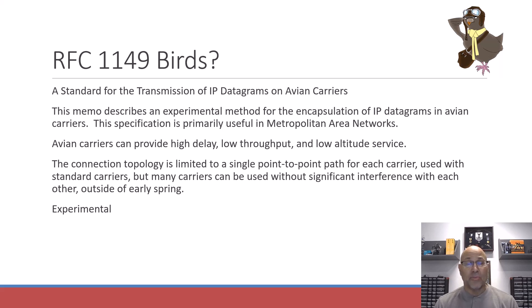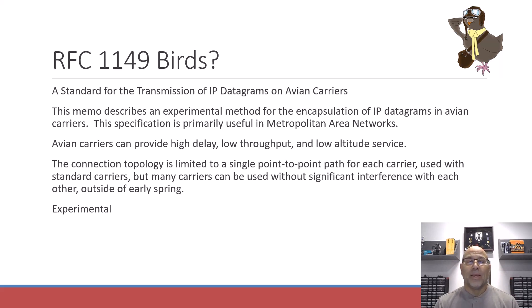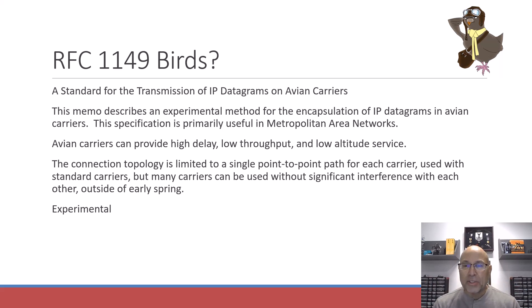Avian Carriers can provide high delay, low throughput, and low altitude service. The connection topology is limited to a single point-to-point path for each carrier — so from here to there, usually not broadcasting or multicasting. Many carriers can be used without significant interference with each other, outside of early spring.